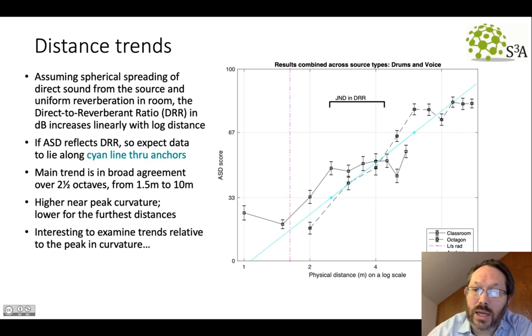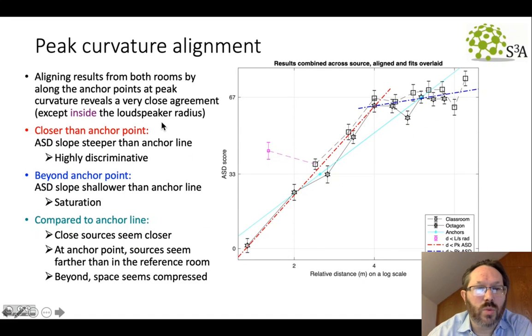And in order to examine that property in a bit more detail, we aligned these two results on their peak curvature points, which also coincided with the anchor positions. Aligning those one on top of the other, we see a very good agreement between the two curves, which both have this steep initial rise and a gentler gradient thereafter, except for this anomalous one meter point.